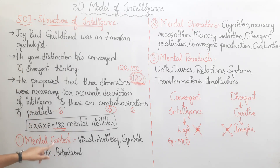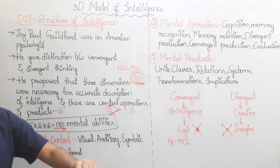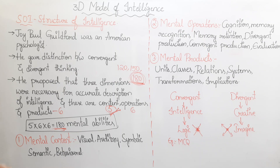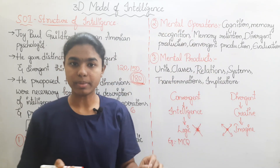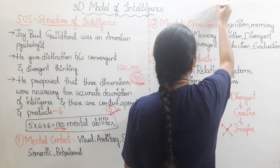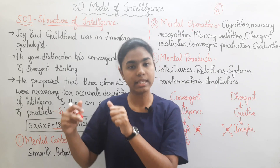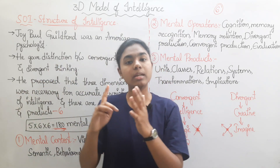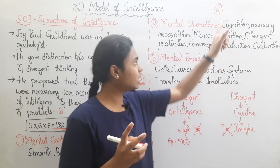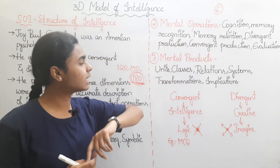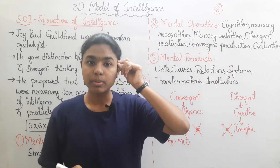So Mental Content has five mental abilities: visual, auditory, symbolic, semantic, and behavioral. Moving to the second dimension, Mental Operations, which has six abilities. First is Cognition — the ability to learn, discover, and be fully aware of content and knowledge. Second is Memory Recognition — the ability to recognize stored knowledge.